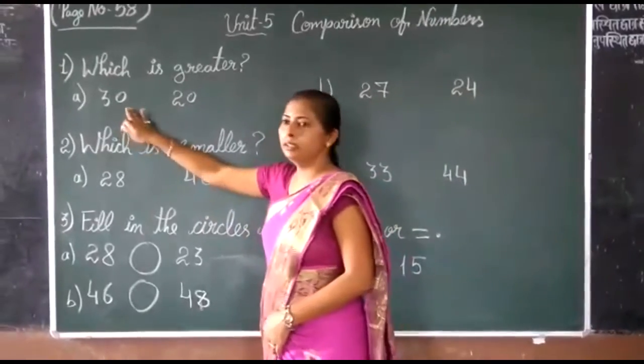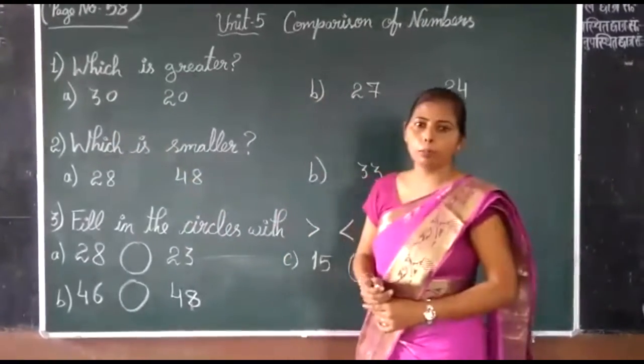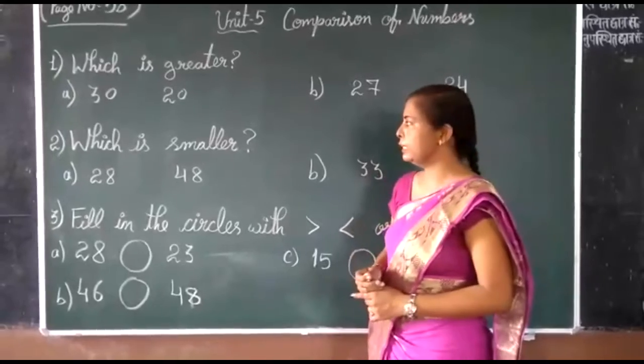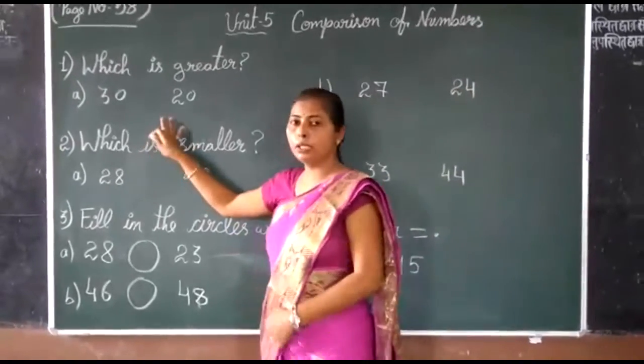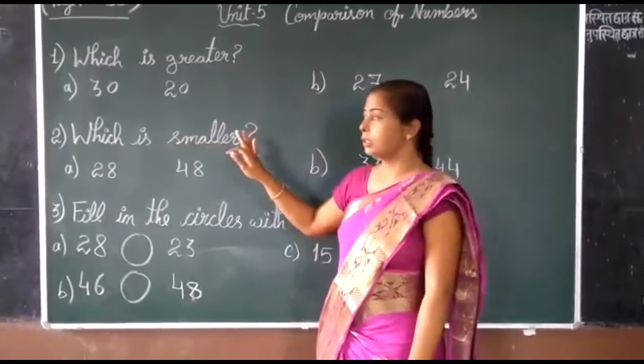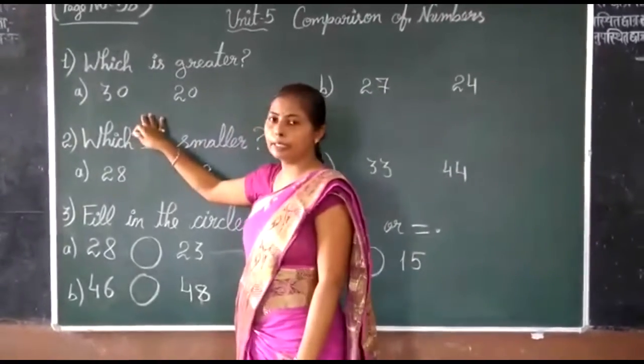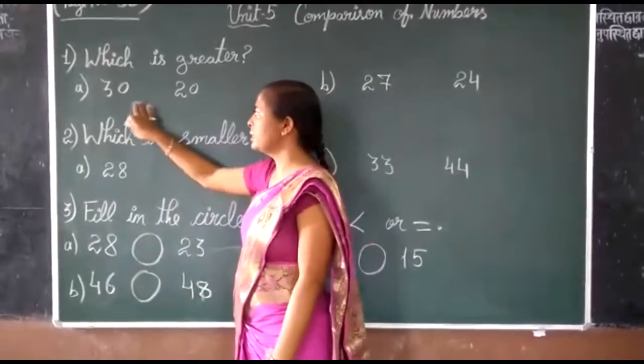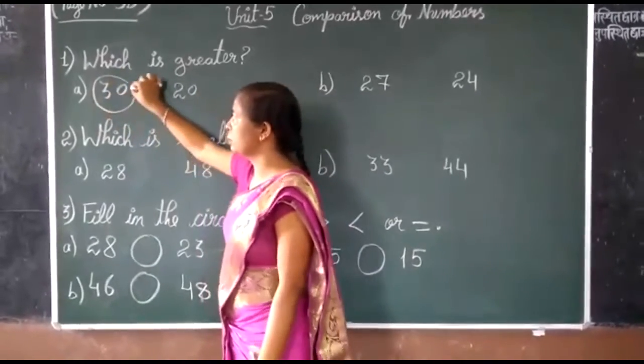See here, there are two numbers. Which is the greatest? The biggest number is the greatest number. So here, 30 is the greatest number.